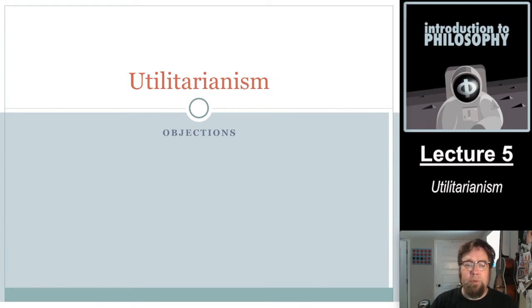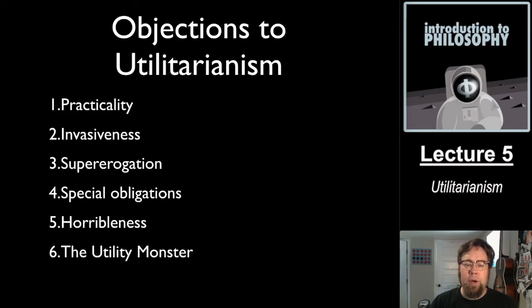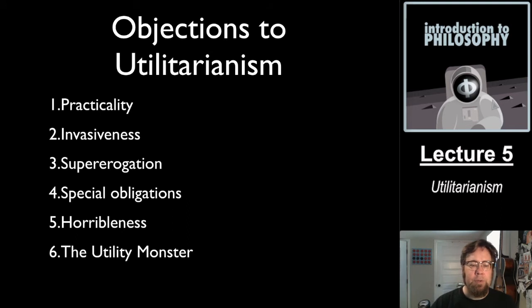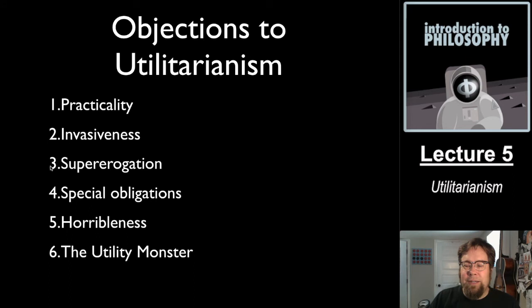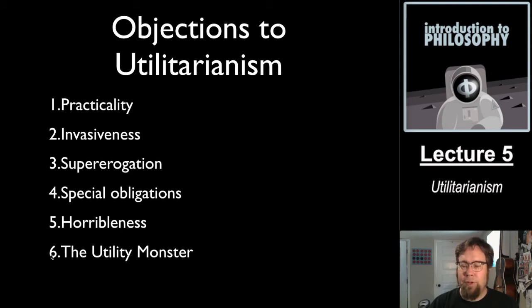Let's move on to discuss some of the main objections to utilitarianism. We're going to look at six: the practicality objection, the invasiveness objection, the supererogation objection, the special obligations objection, the horribleness objection, and an objection called the utility monster.